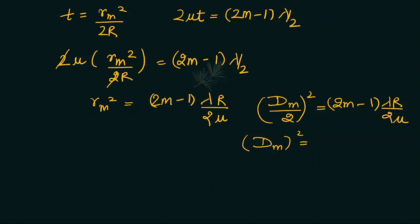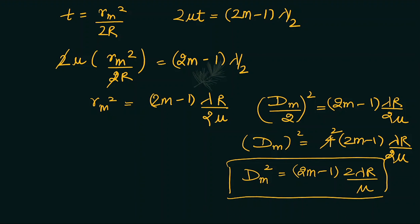So this diameter squared is equal to 4(2m-1)λR/(2μ), which becomes d_m² = 2(2m-1)λR/μ. This is the expression we are going to use in this question. We will take μ = 1 for air film.